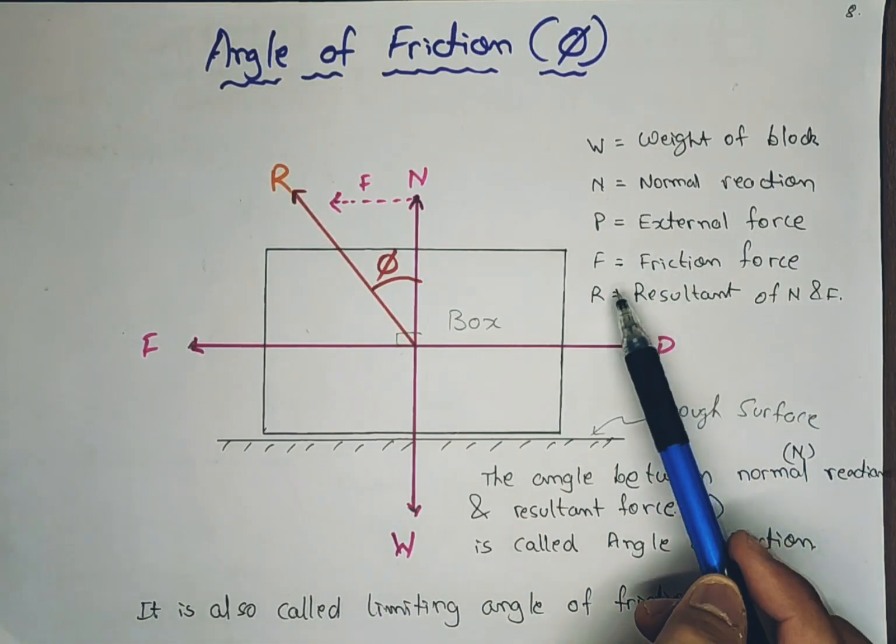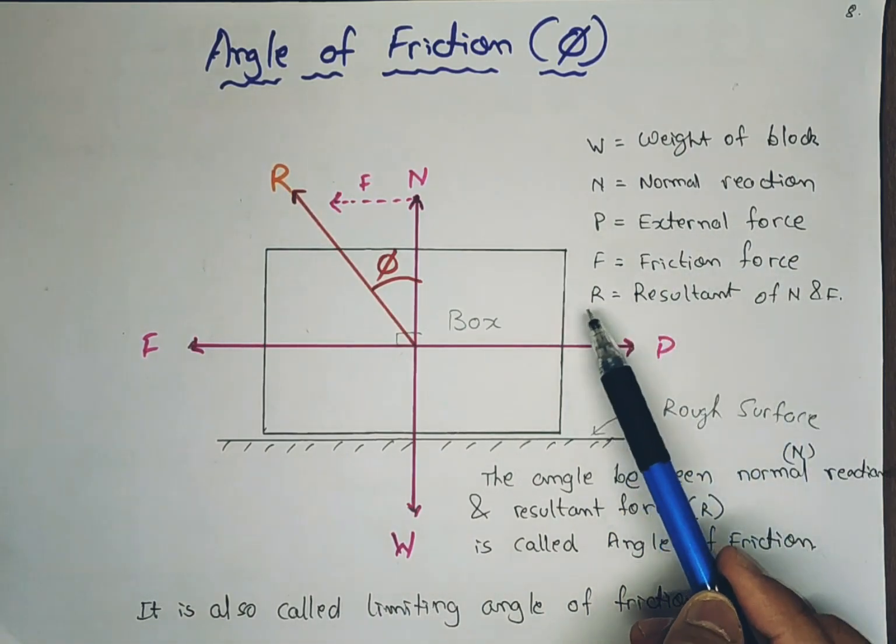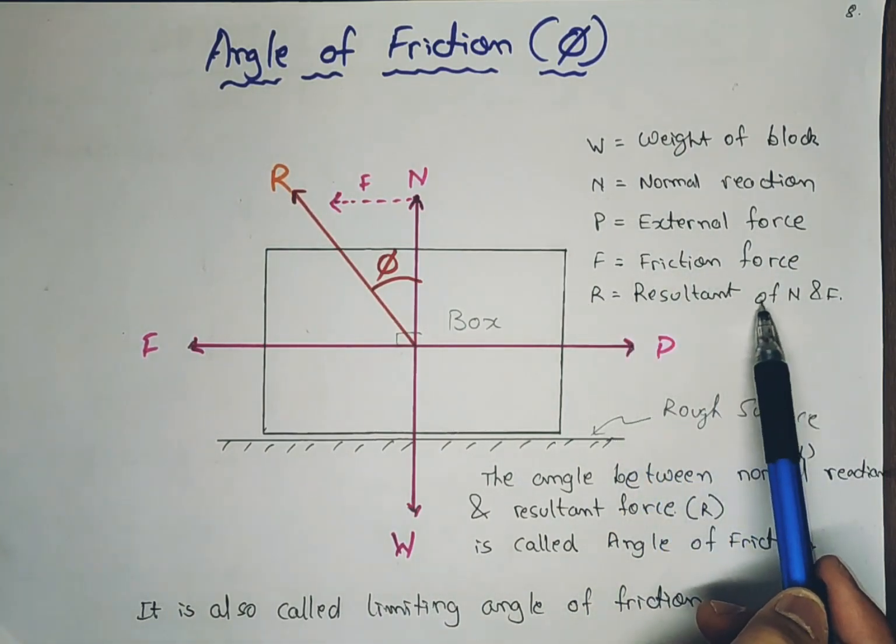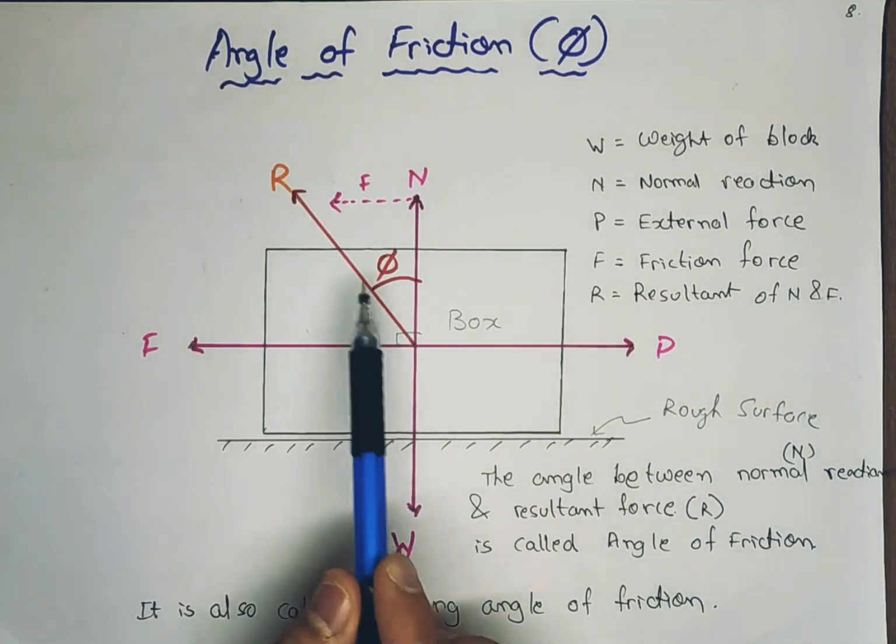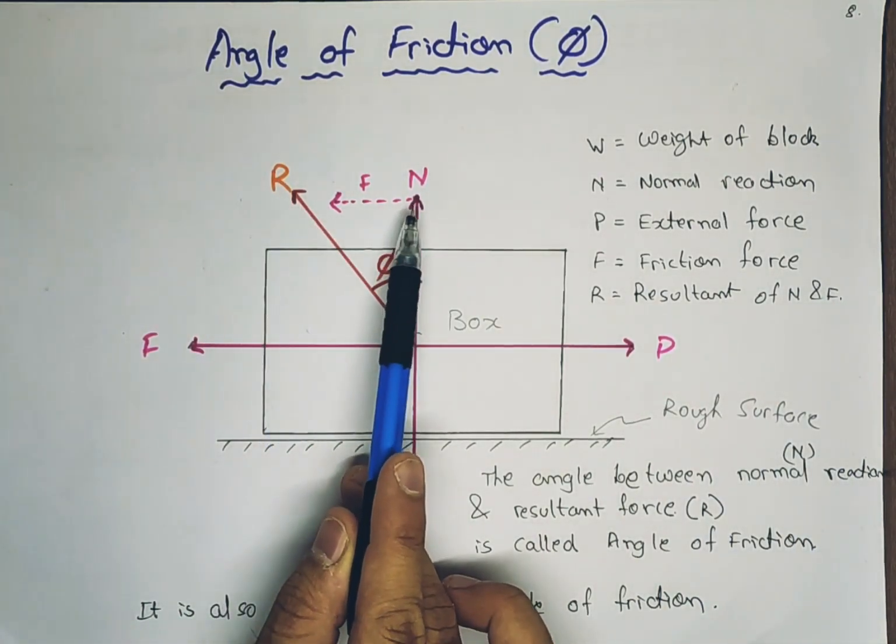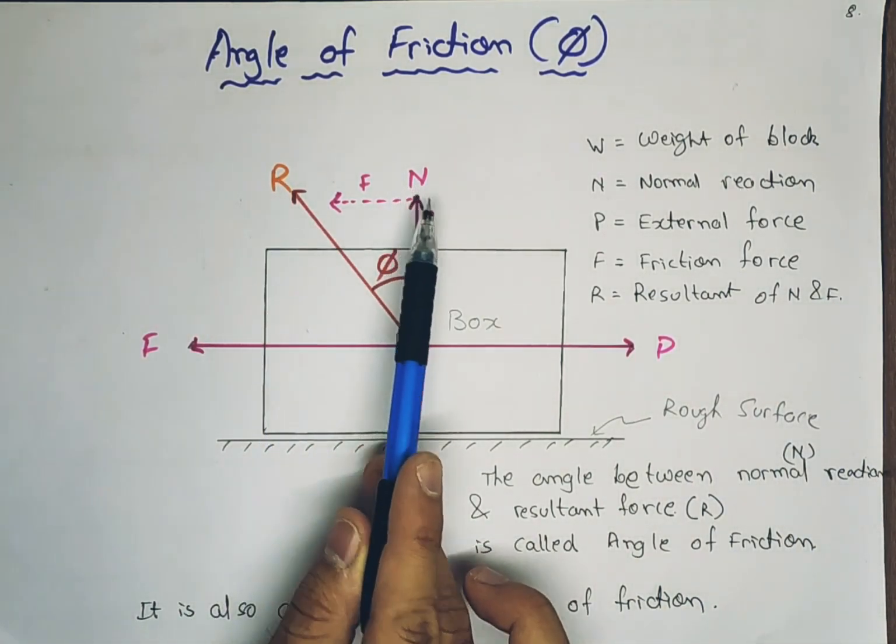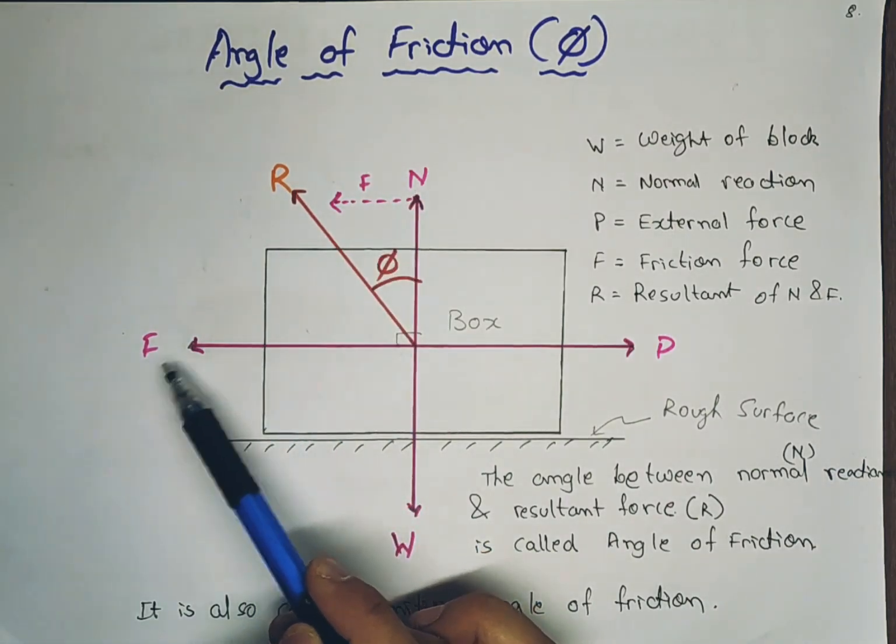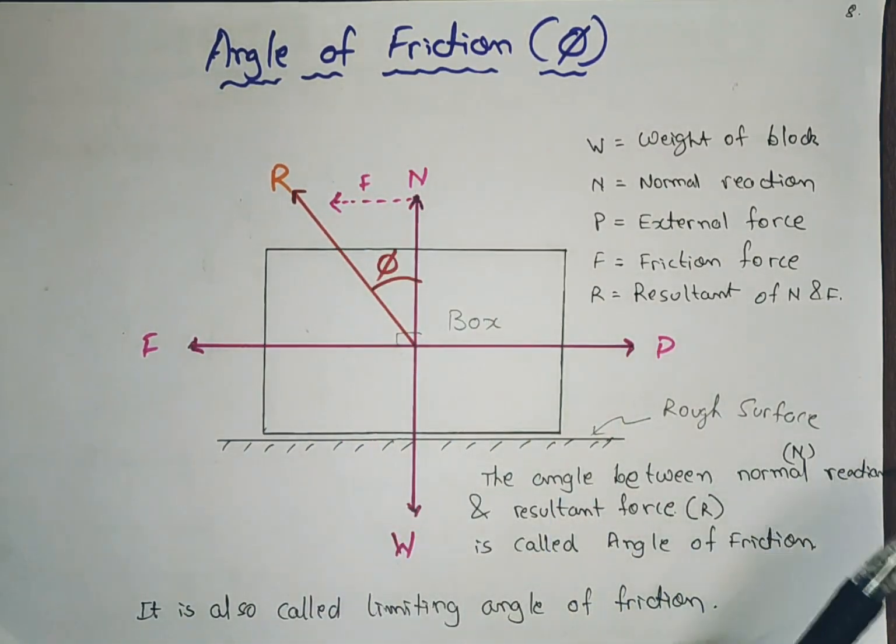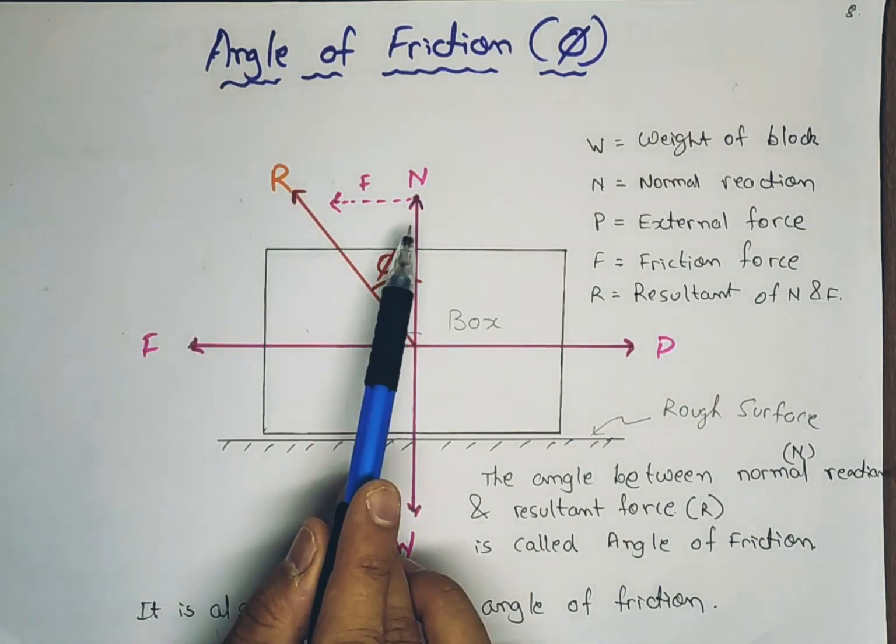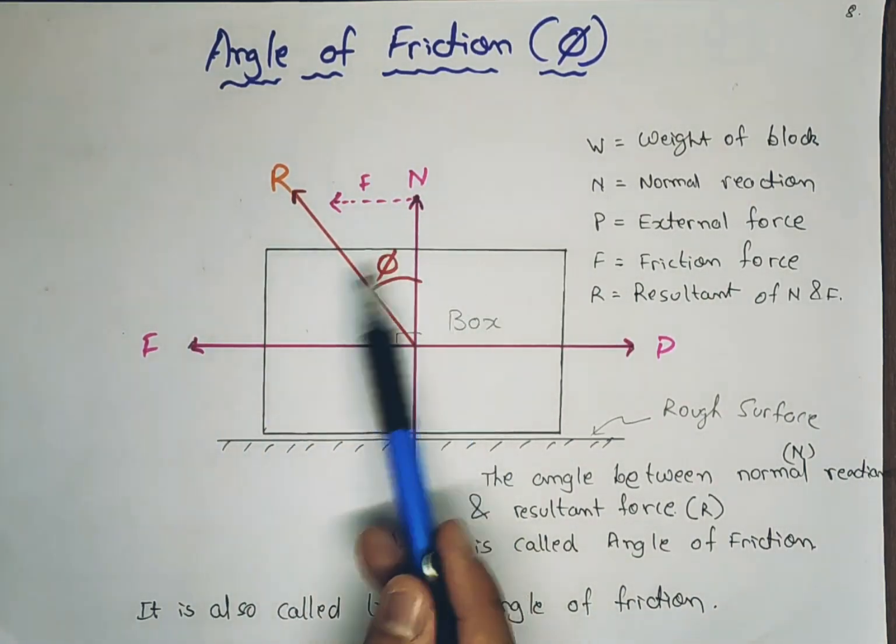P is the external force, F is the frictional force, and what is this resultant of N and F? It is the resultant force of the normal force and frictional force. If we remove these two forces and replace it with another force which is equal to the magnitude and direction of both of these, that is known as resultant force.